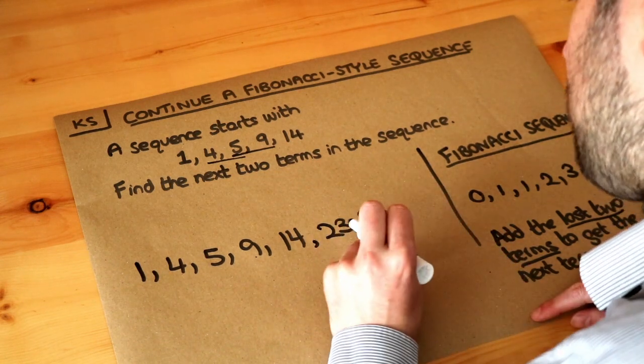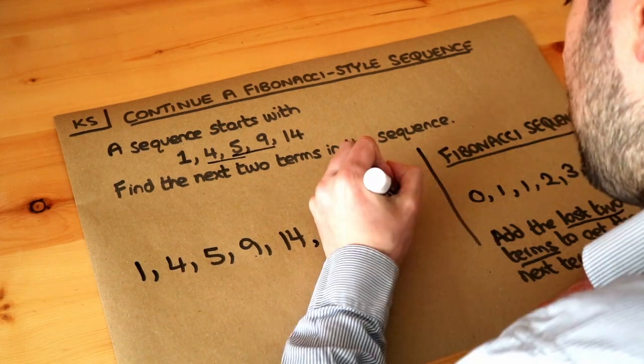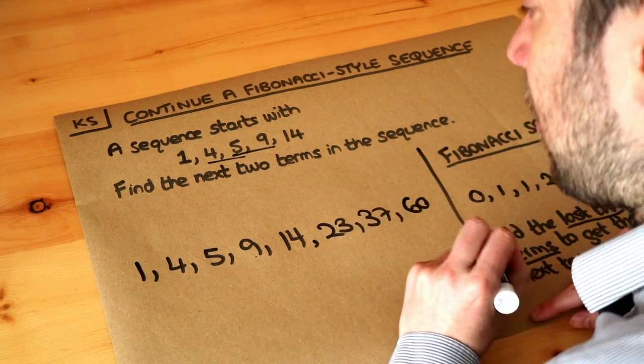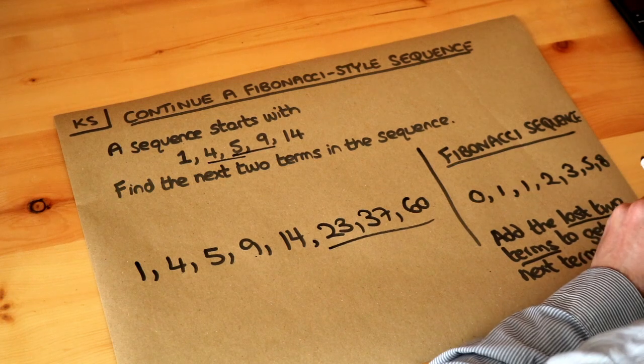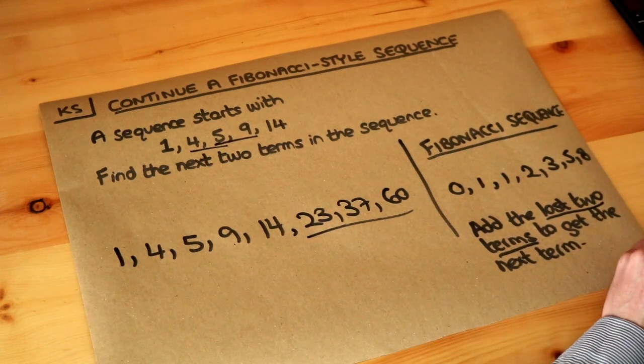Add the last two terms to get the next one. 23 plus 37 is 60. And how many does it want? Oh, it just wants the next two terms. So we've actually given three. So we've done more than the questions asked. But that would be the answer.